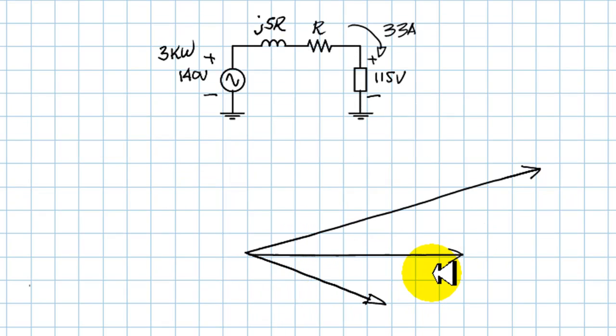I draw the phasor diagram where I write down the phasor of 115 volts, the voltage at the factory, 140 volts, the voltage at the source, and the current of 33 amps. You say, wait a minute, are you assuming the load is inductive? Well, that is a reasonable assumption. After all, the voltage drop from 140 to 115 is so significant that most likely the load is inductive. What we need to find is the power factor at the factory. We need to find the angle between this voltage and this current and then take its cosine. Let's see what we know.